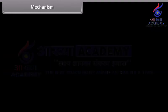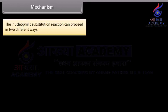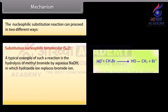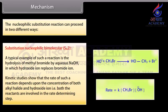The nucleophilic substitution reaction can proceed in two different ways. Substitution nucleophilic bimolecular, SN2: a typical example is the hydrolysis of methyl bromide by aqueous NaOH, in which hydroxide ion replaces bromide ion. Kinetic studies show that the rate of such a reaction depends upon the concentration of both alkyl halide and hydroxide ion, that is, both the reactants are involved in the rate-determining step.